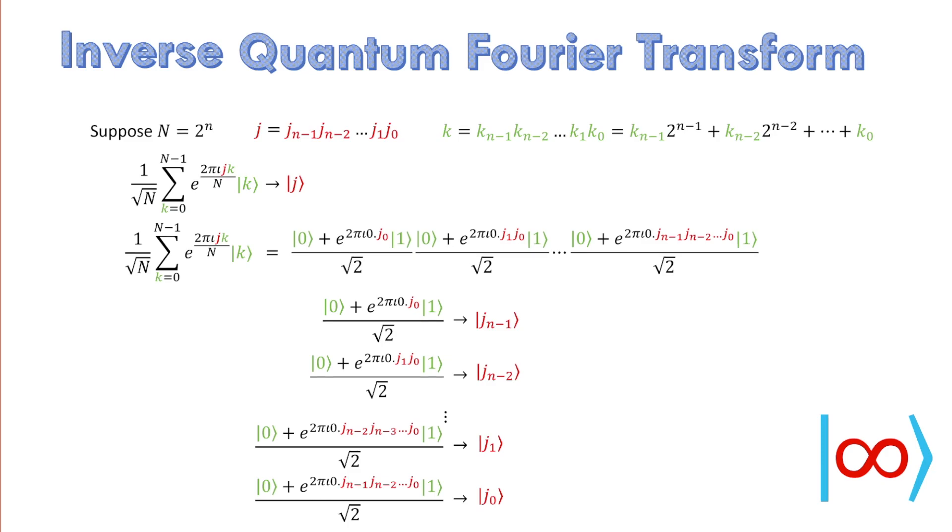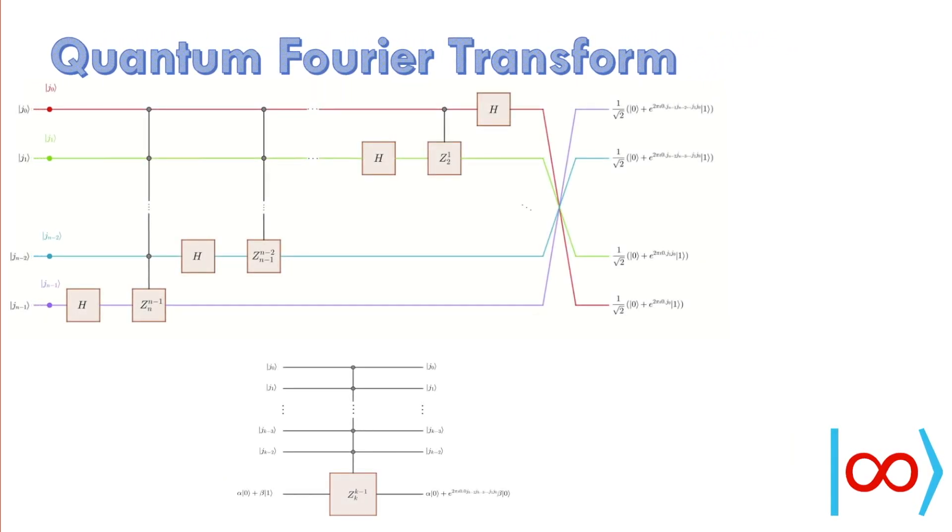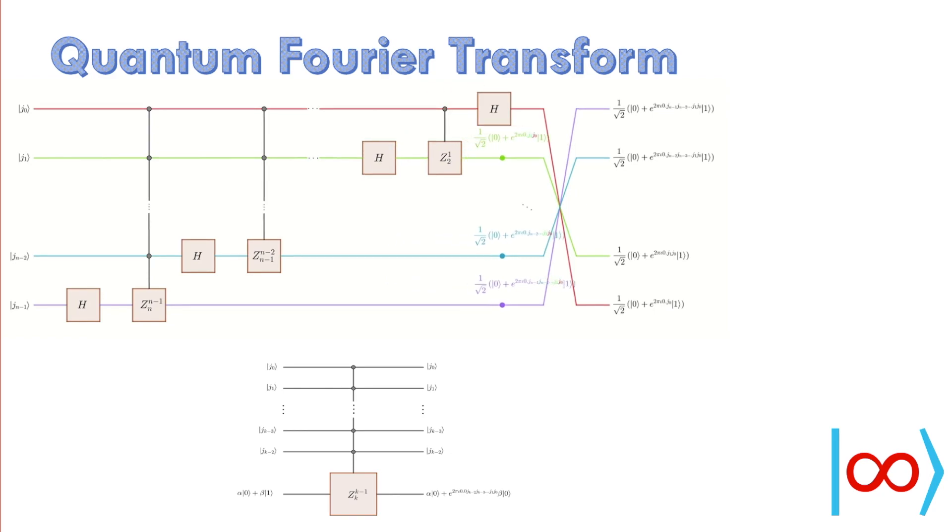The modified version of the power gate used in the quantum Fourier transform is represented by zk power k-1. The lower k denotes division by 2 power k while the upper k-1 denotes control by k-1 qubits.